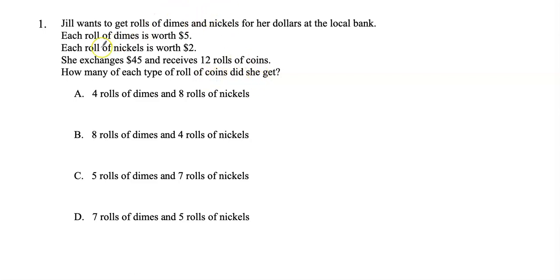So basically Jill went to the bank. She had $45 in cash and she wants to exchange those for rolls of coins. Let's highlight some important information here: each roll of dimes is worth $5, a roll of nickels is worth $2, she exchanges $45, and she receives 12 rolls of coins.